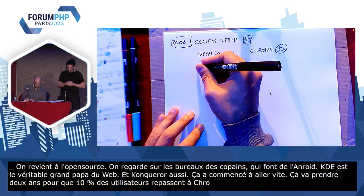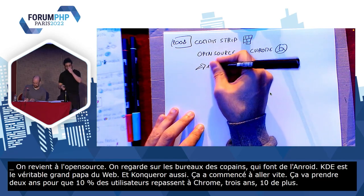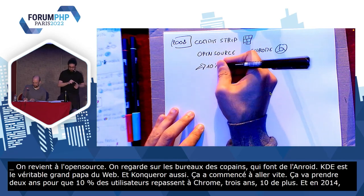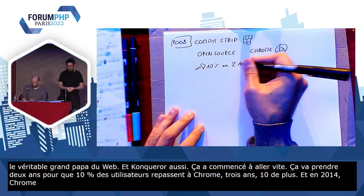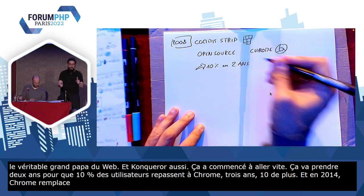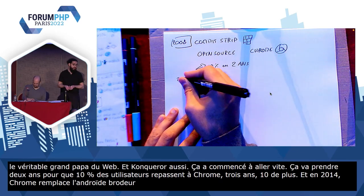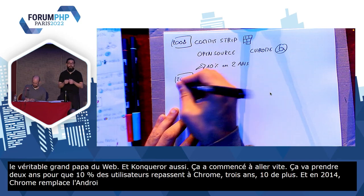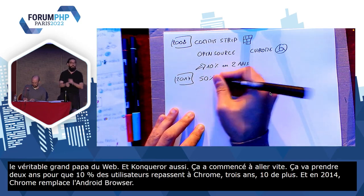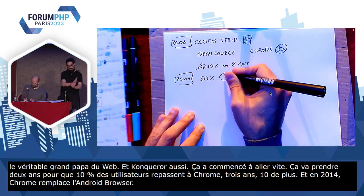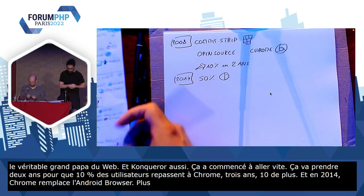Et en 2014, Chrome remplace l'Android Browser sur Android. Et finalement, en 2017, plus de la moitié des gens utilisent Chrome et plus de la moitié des consultations de sites web se font depuis un mobile. Donc, vraiment, 2017, c'est une phase charnière pour le web.